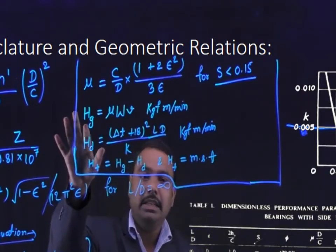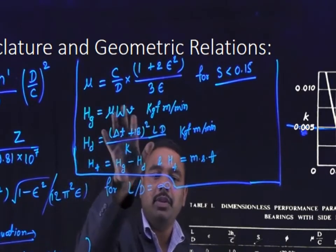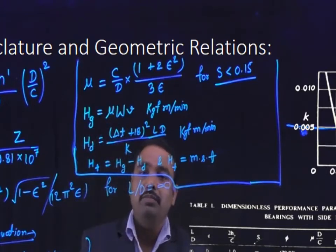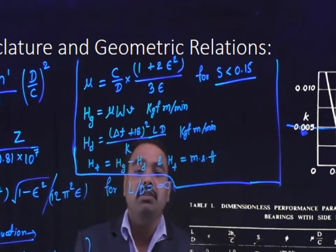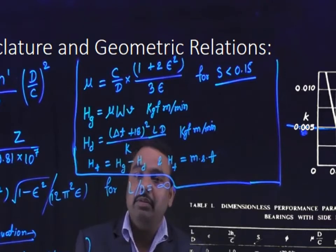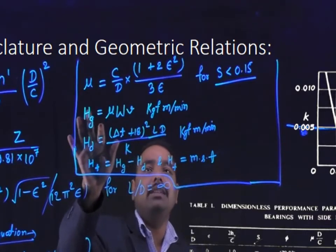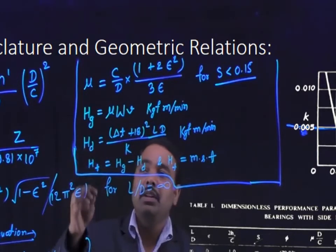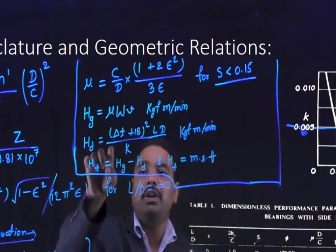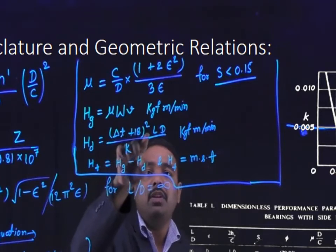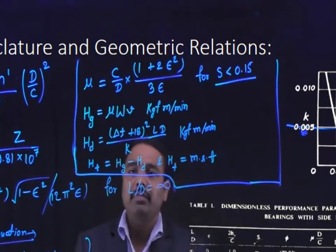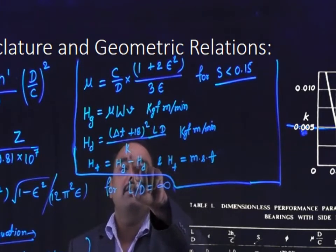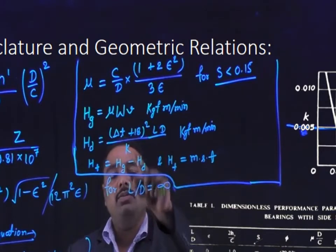Next, we calculate heat generated Hg using the formula: Hg = mu into W into V, where mu is the coefficient of friction, W is the load, and V is the surface velocity of the journal in meters per second. This gives Hg in kgf-meters per minute. Then calculate heat dissipated Hd using the formula: Hd = (delta T + 18) squared into LD divided by K. Here delta T is the change in temperature, L and D are known, and K is a constant selected from the PSG design data book page 7.35 — 437 for heavy duty, 775 for light duty.